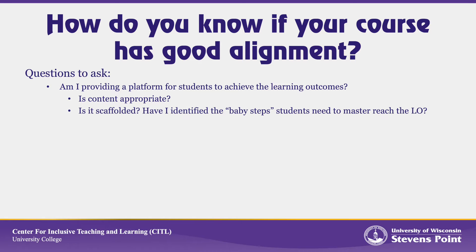Next, ask whether you've appropriately scaffolded the content. There are a number of baby steps in learning that students need to make in order to reach a lot of those higher-level learning outcomes. Have you adequately identified them? And after you've identified them, have you provided all of the content and background information that students need to achieve the learning outcome? If not, ask yourself where you're expecting students to have achieved these lower-level skills.